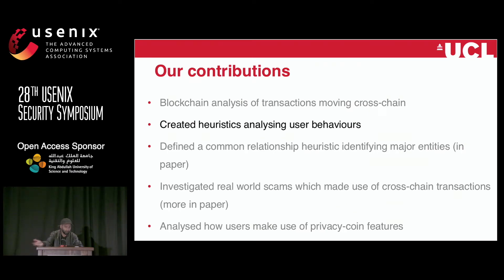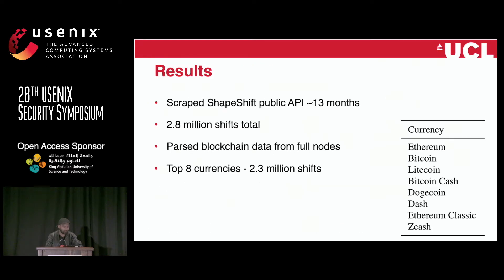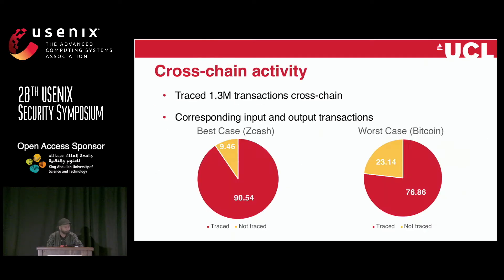Now that we know how to do this attack, we looked into heuristics to understand how users interact. We scraped for 13 months and got 2.8 million shifts in total. From these, we picked the top eight coins, covering around 2.3 million transactions. We ran full nodes, downloaded all the data, and parsed it to analyze the chains ourselves. We were able to track 1.3 million transactions that went completely across chain, with both input and output transactions. Best case was Zcash at 90%, worst case was Bitcoin at 76%.